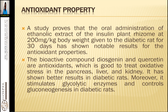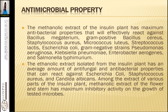Moreover, the insulin plant stimulates glycolytic enzymes and controls gluconeogenesis in diabetic rats. Gluconeogenesis is the process by which your pancreas develops cells able to convert sugar and also produce beta cells that control your sugar levels.